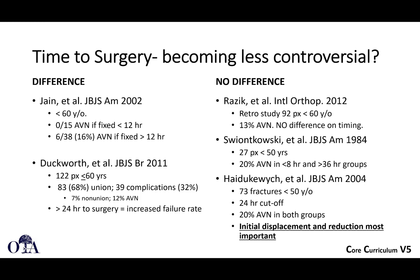Some studies show there is a difference in timing. A 2002 study in younger patients showed no osteonecrosis when fixed within 12 hours, but a 16% rate of osteonecrosis when fixed over 12 hours. A 2011 British JBS paper showed that greater than 24 hours to surgery led to an increased failure rate. However, other papers show no difference — a retrospective study showed no difference in timing, and JBJS 1984 showed 20% osteonecrosis whether fixed early or after 36 hours. A 2004 JBJS paper of 73 younger patients using a 24-hour cutoff found 20% osteonecrosis in both groups. What was truly important was the initial displacement and quality of reduction.